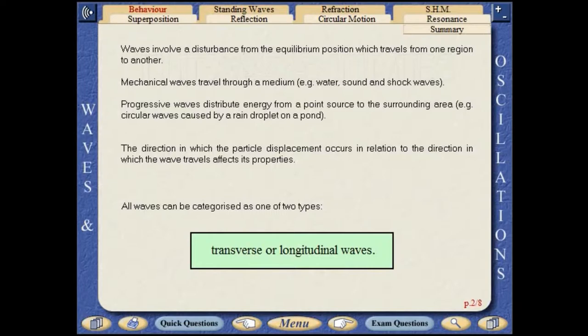The direction in which the particle displacement occurs in relation to the direction in which the wave travels affects its properties. All waves can be categorized as one of two types: transverse or longitudinal.